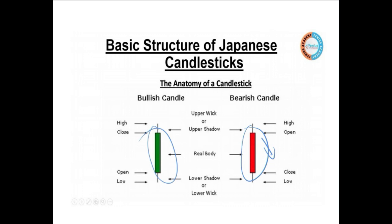The center part of the candlestick is called the real body. The vertical line on the top is known as the upper shadow, and the vertical line on the bottom is known as the lower shadow, or lower wick.